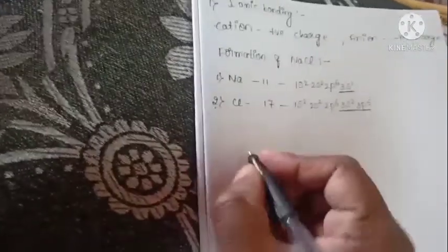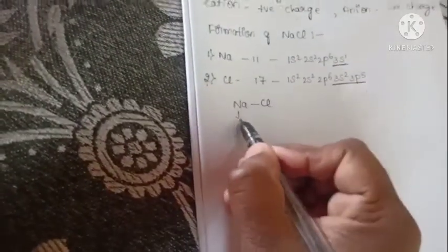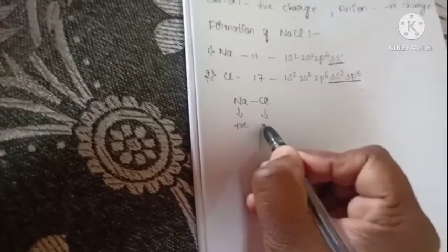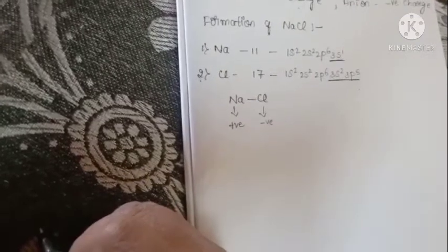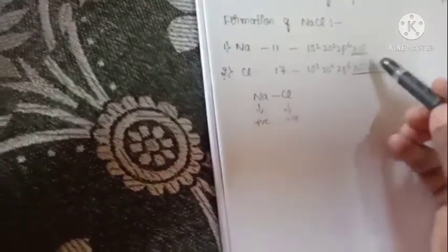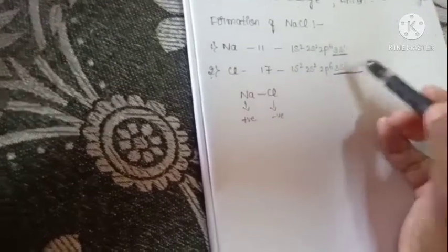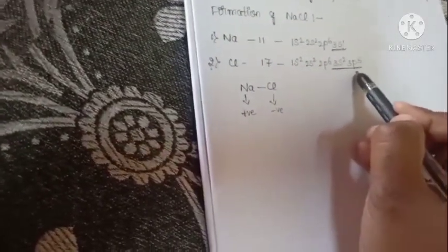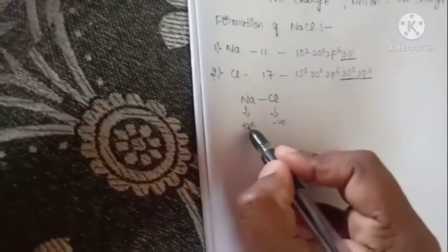Next we move on to the formation of sodium chloride. In sodium chloride it forms a single bond. Sodium carries a positive charge; chlorine carries a negative charge. Sodium has one electron in the outermost shell — it donates that one electron to chlorine's outermost shell. So that is why sodium carries a positive charge and chlorine carries a negative charge.